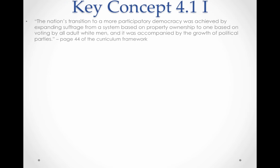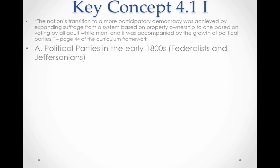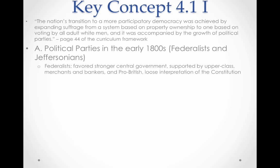Key Concept 4.1, Roman Numeral I: the nation's transition to a more participatory democracy was achieved by expanding suffrage from a system based on property ownership to one based on voting by all adult white men, accompanied by the growth of political parties. Now, remember what Washington said about political parties — he was against forming them — and as soon as he said that, they formed anyway.